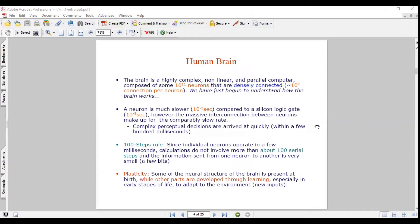The 100 steps rule: since individual neurons operate in a few milliseconds, calculations don't involve more than about 100 serial steps. And the information sent from one neuron to another is very small, a few bits will be transferred. Some of the neural structure of the brain is present at birth, but other parts are developed through learning, especially in early stages of life, to adapt to the environment.